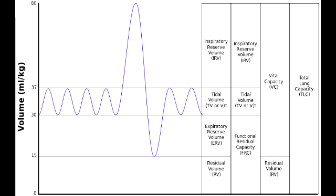Now as we already mentioned the different lung volumes, this should help you understand the capacities. So the inspiratory capacity is the total amount of air that can be breathed in — this includes the tidal volume plus the inspiratory reserve volume. Basically, this is the maximum inspiration you could do.